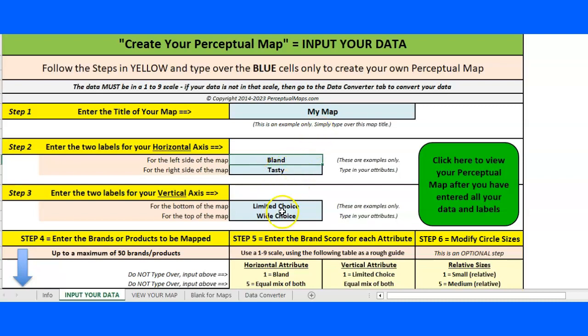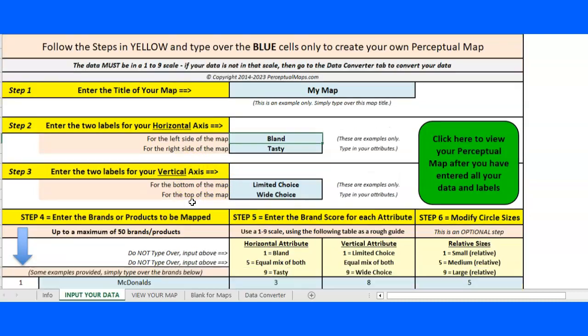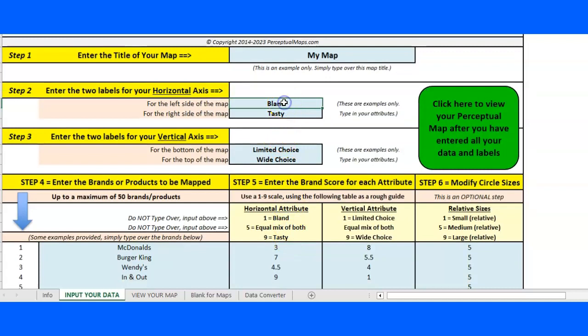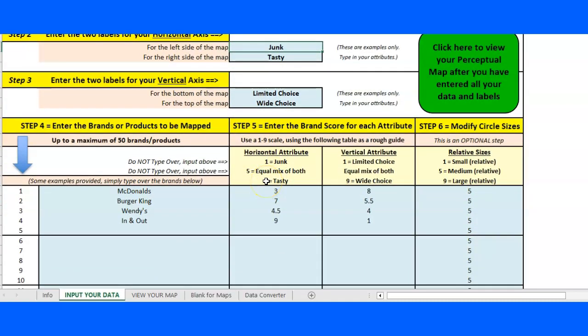This is for fast food, and I've got 'limited choice' and 'wide choice,' which is the vertical one there. This automatically populates down here, so if I change that there, it immediately changes down here. When I'm down here putting in the data, we can see what's happening.